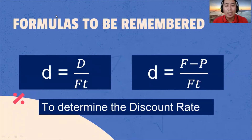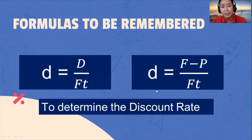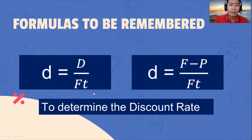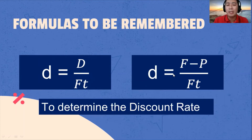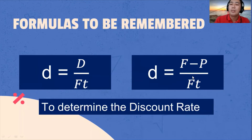Let's now try to determine the discount rate formula to be used. Discount rate is equal to bank discount over maturity value multiplied by time. Or it can be: discount rate is equal to maturity value minus the proceeds, over the maturity value multiplied by time.